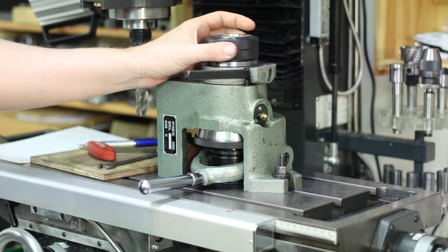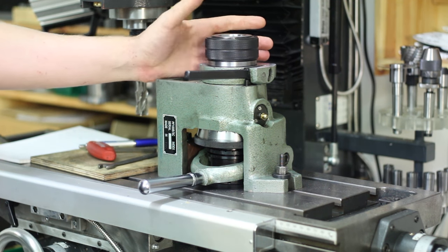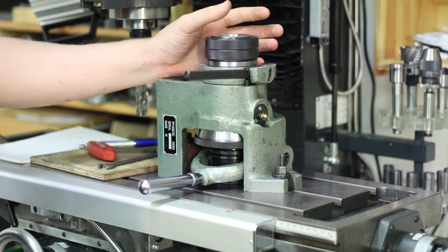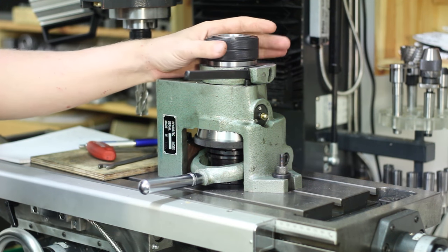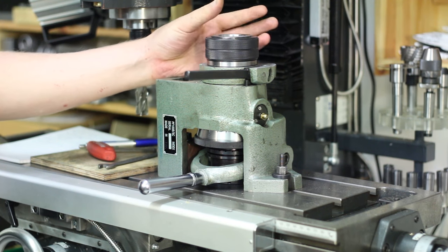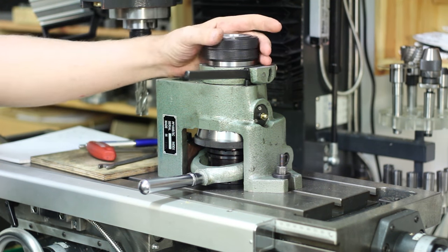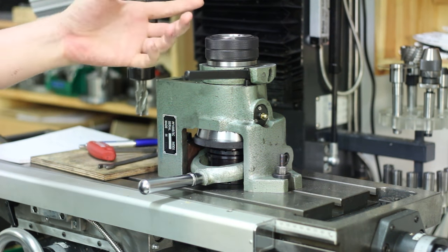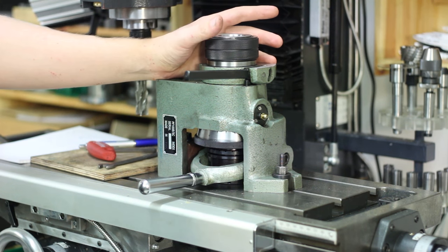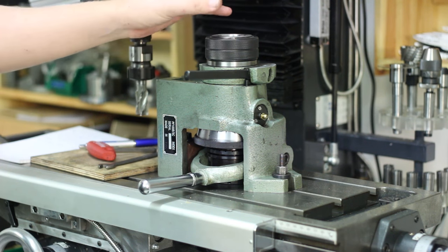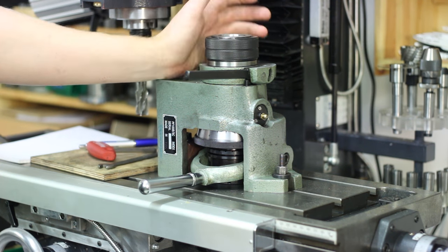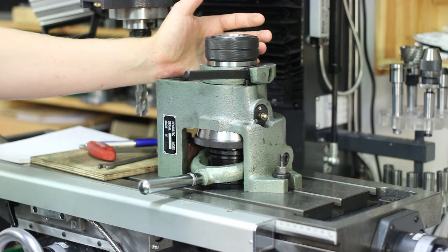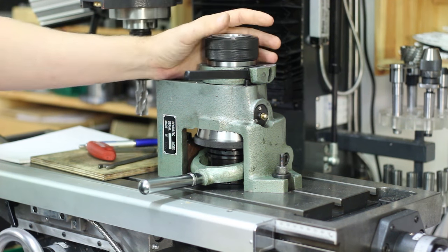The nice thing about the 5C collet is that you get a wide variety of collets. You can get normal straight cylindrical bores. You get emergency collets that you can bore to size. You get internal clamping collets. You get square hex. You get everything. You get even back plates that have four jaws that have a 5C shank on them.